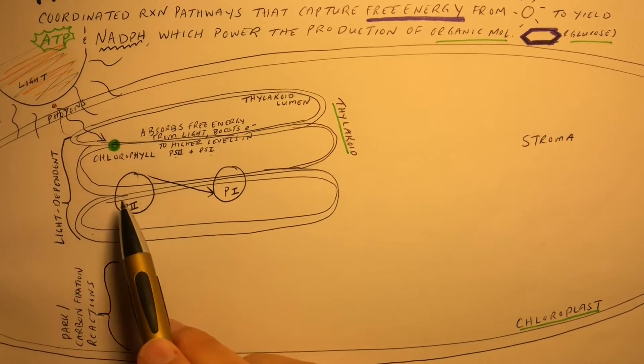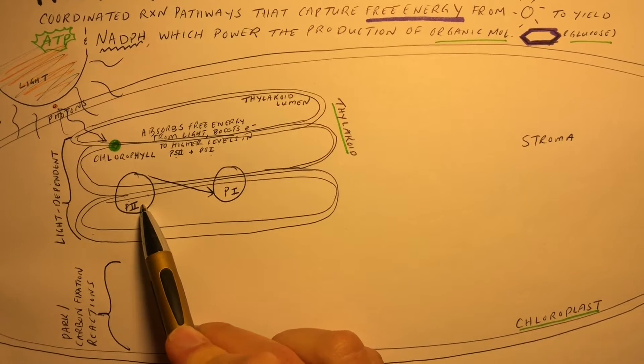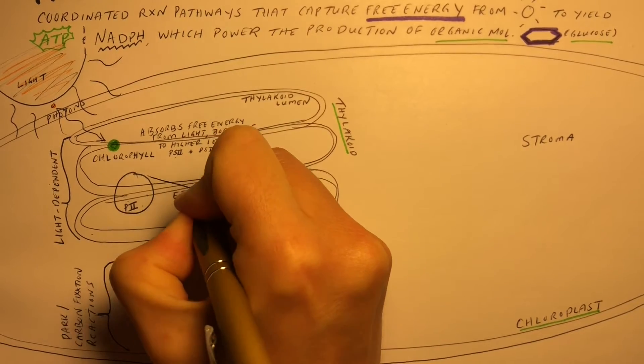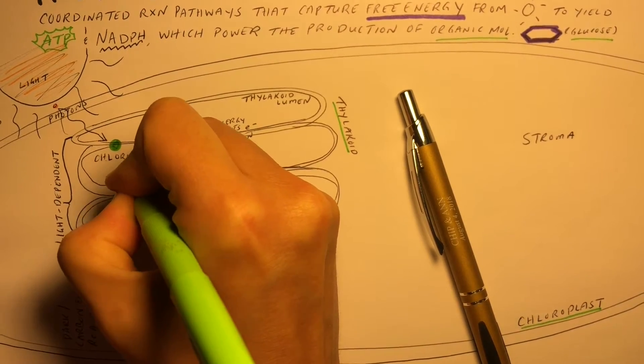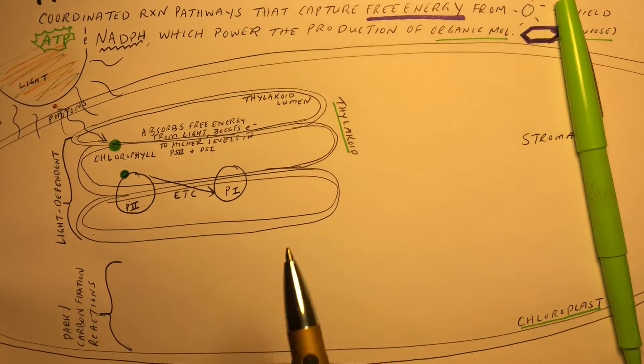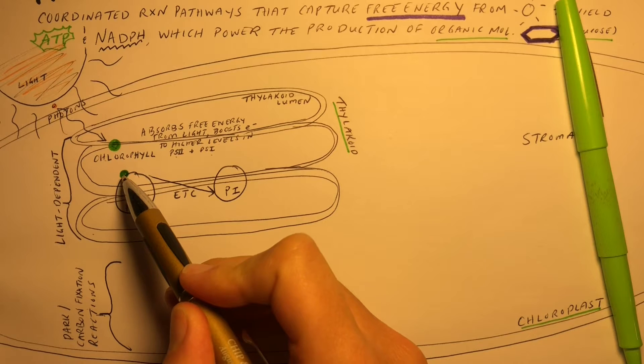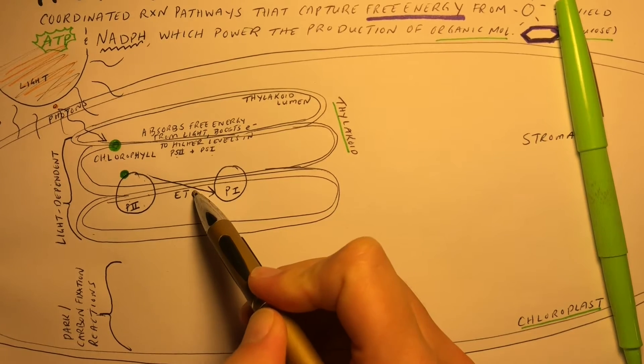Photosystems 1 and 2 are protein complexes that are embedded in the internal membranes of our thylakoids. These will form an electron transport chain with the transfer of electrons. When light gets to the chlorophyll in photosystem 2, it boosts electrons to higher levels. These electrons will then leave photosystem 2 and travel down the electron transport chain.